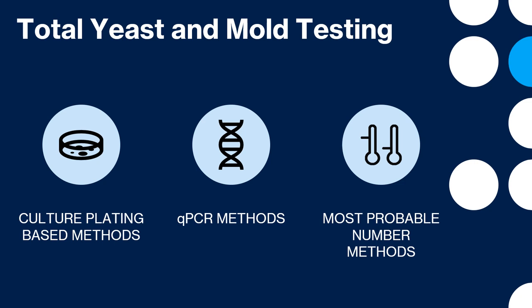Now that we have established what total yeast and mold is, what the limit is, and the fact that it is a required analysis in Florida, we're going to look at the various methods and technologies that can be used to perform the analysis. For total yeast and mold testing, there are three prominent method types: culture plating methods, quantitative polymerase chain reaction or qPCR methods, and cultured most probable number or MPN methods. Over the next several slides, we're going to discuss each of these technologies.